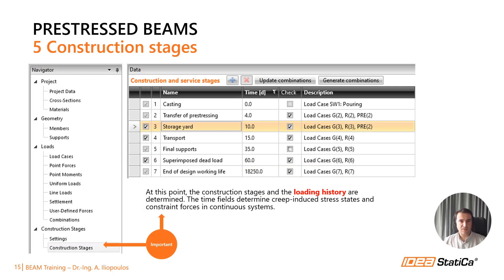To define the construction schedule, we click on construction stages in the menu tree. The construction stages are predefined according to the selected type of beam. For each construction stage, BEAM will perform ULS and SLS calculations. It is important to set realistic time values, otherwise creep may be incorrectly considered in the calculations. We also have the option to name the construction stages according to our own wishes.